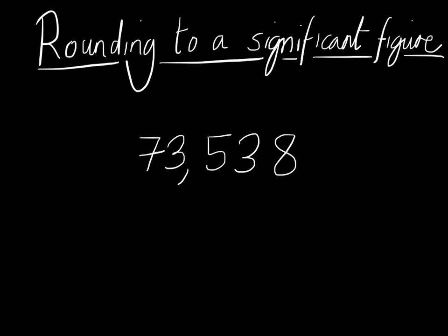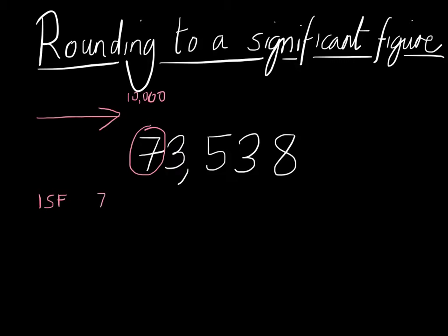Now, when you're dealing with significant figures, you look at a number from left to right. The first significant figure is the first number you see as you look from left to right, so that's the 7. This number is a 7, and it's actually in the ten-thousands column. So the first significant figure represents 70,000.